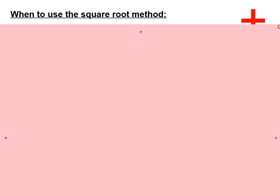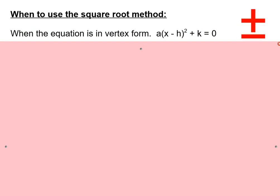So the next method we learned was the square root method. And we want to talk about when to use the square root method. And this is specifically when your equation is in vertex form. So vertex form is a(x - h)² + k = 0. Those parentheses are kind of the hallmark telling you that this is vertex form. So there are a few situations where it can be in vertex form. If h is 0, it doesn't have those parentheses. Because if you're doing x - 0, you wouldn't need the parentheses.